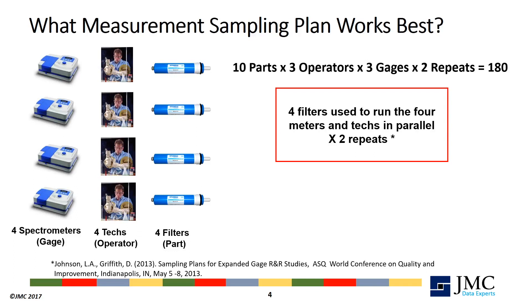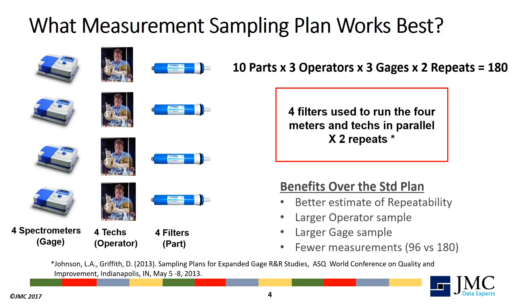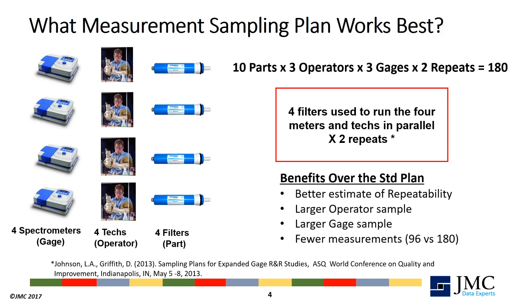The manufacturer's study randomly selected 4 filters which were measured by 4 operators on 4 spectrometers, twice. Measurements were run in parallel to minimise the time required for the study. Benefits of this plan over the standard plan were a better estimate of repeatability, a larger sample of gauges and technicians, and only about half the number of total measurements.